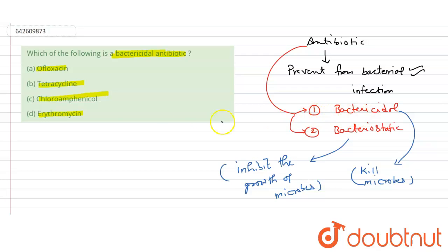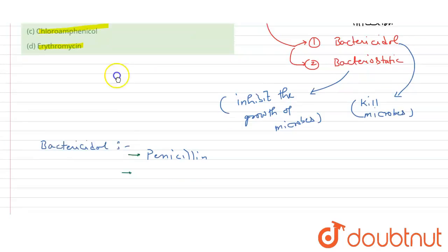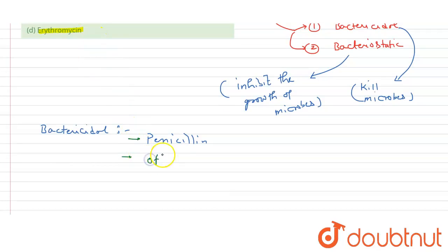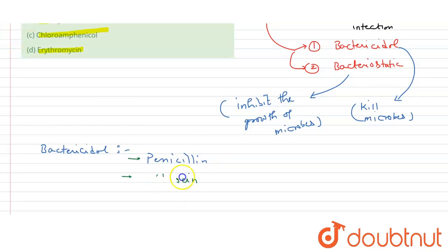Now let's look at examples of bactericidal antibiotics. Examples of bactericidal antibiotics include penicillin and ofloxacin. These are the two medicines used as bactericidal antibiotics.